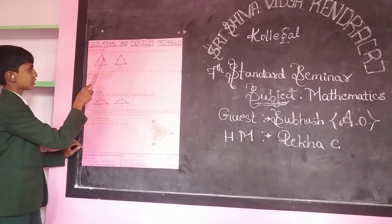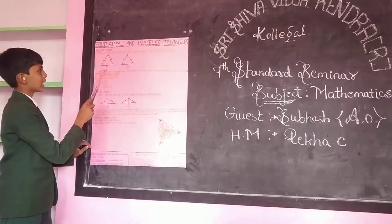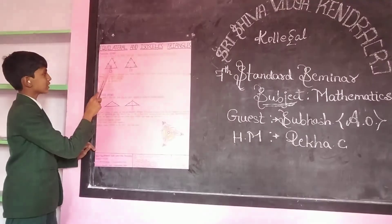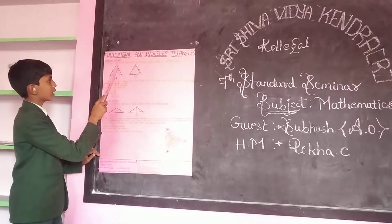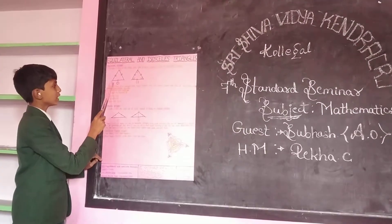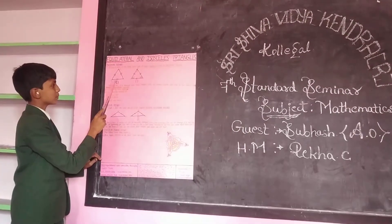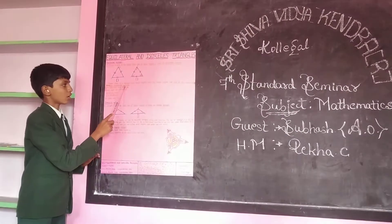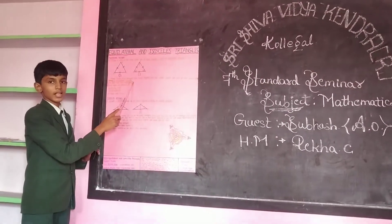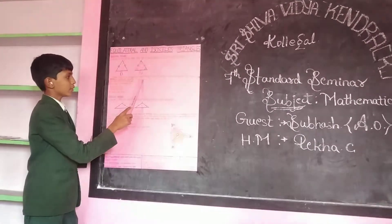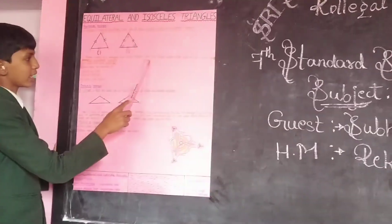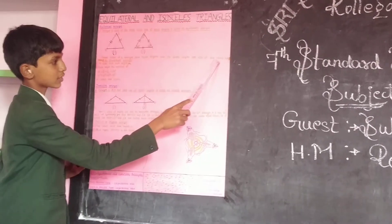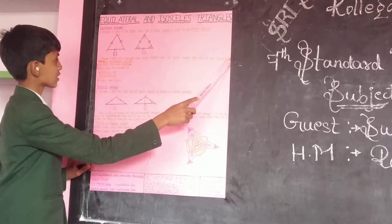This is triangle ABC in which all three sides are equal. AB equals BC equals AC — all three sides of the triangle have equal length. So the three angles are also of the same size.